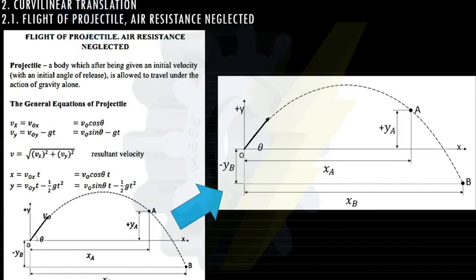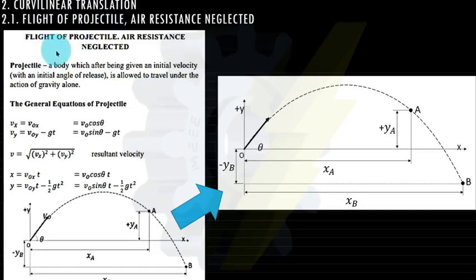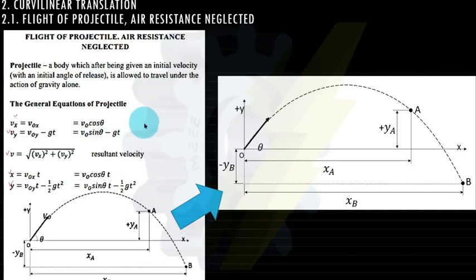Let us discuss our next topic: curvilinear translation. For this chapter we have four subtopics. Our first subtopic is flight of projectile, resistance neglected. When we say projectile, it is a body which, after being given an initial velocity with an initial angle of release, is allowed to travel under the action of gravity alone. What you need to know first are the basic equations.